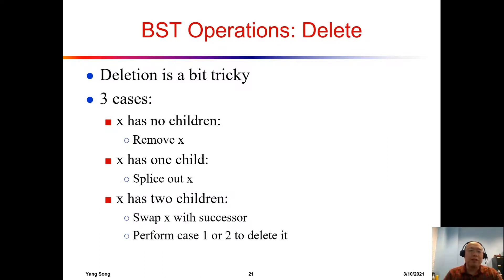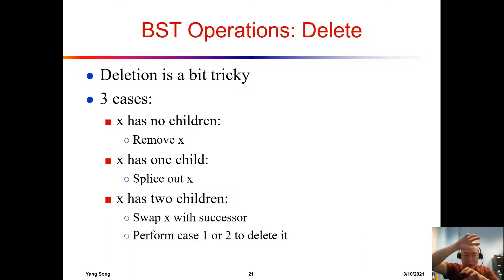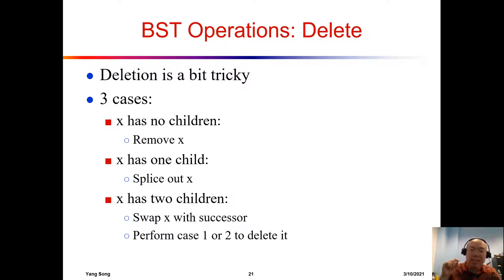There are three different cases. Case one: if x has no children, the easiest — we just throw this node away and we are not breaking anything. For case two: if x has only one child, the only child is going to take the position of x, the node to be deleted. For case three, that's really the hard one: if x has two children, you want to find the successor of x, swap x with the successor, and then the successor stays at the x position. You then move down and recursively delete the new x. At the new location, it will be either case one or case two.